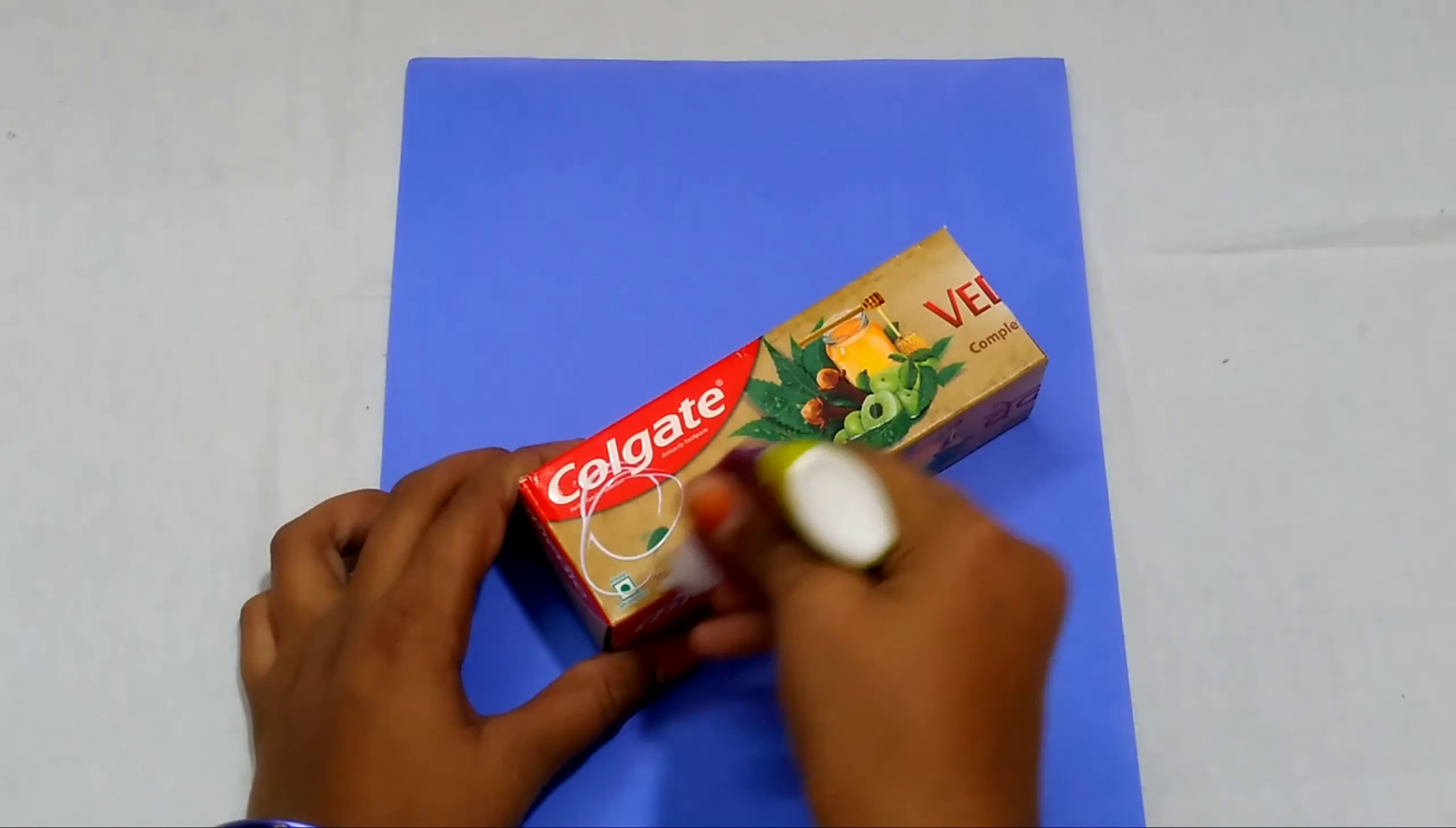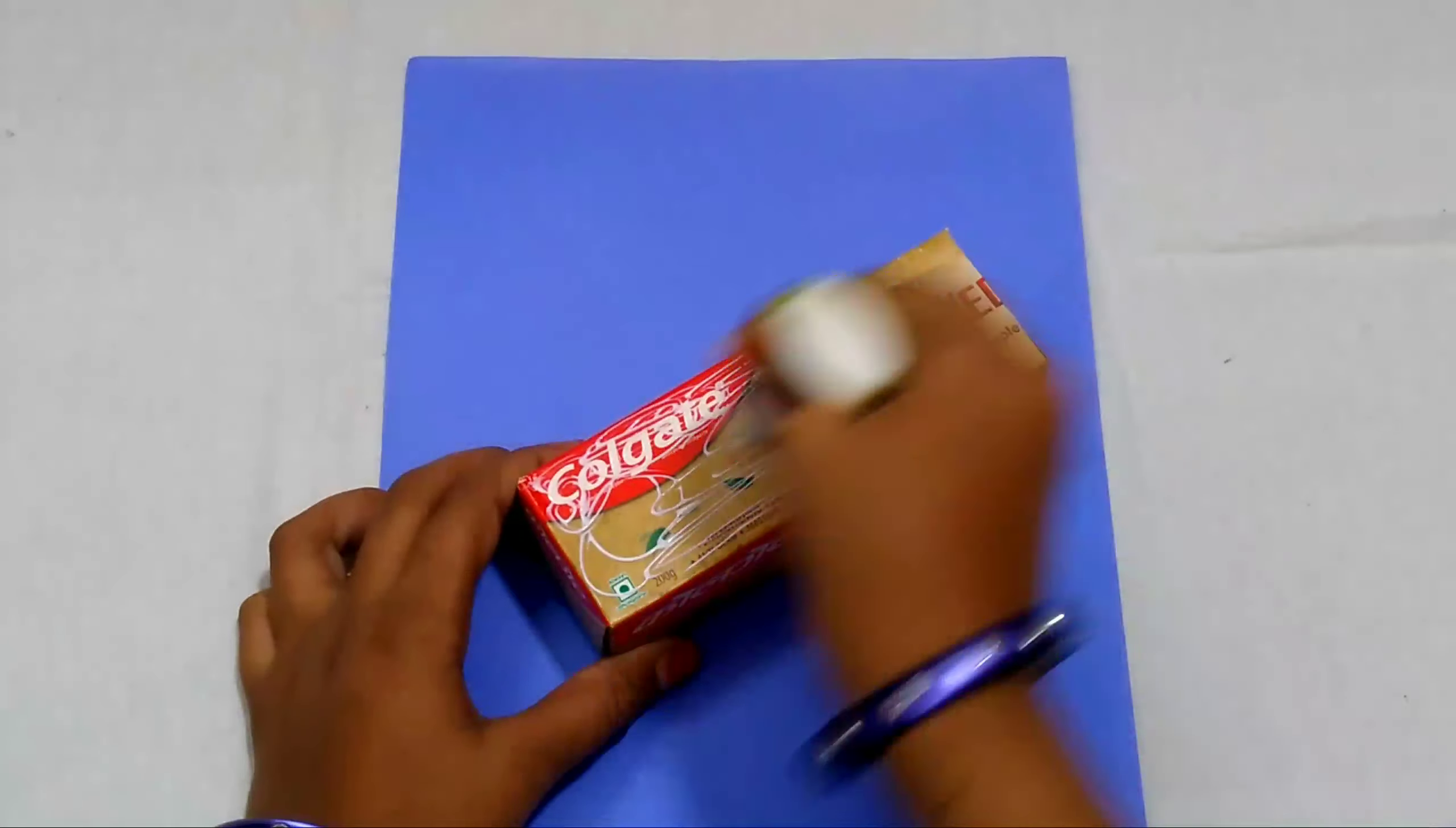Now apply glue to the box and attach the colored paper.